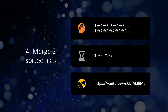The fourth problem is merging two sorted singly linked lists. Given the first and second list, you pick 1, 1, and 2 from the first list because these are the smallest, then 3 and 4 from the second list, then 5 from the first list, so the final merged list is also sorted. This should be done in O(n) time, and links to the detailed explanation will be provided in the video description.